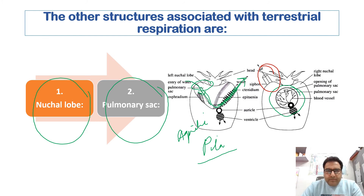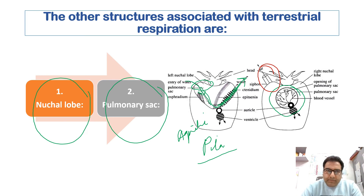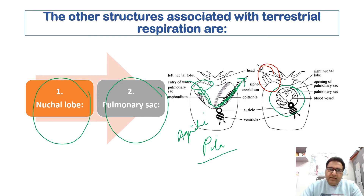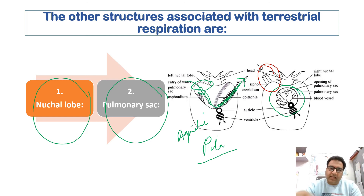In amphibious prosopobranches such as Pila, the paleal cavity is incompletely partitioned by a fleshy fold called the epithenia, creating a right branchial chamber and a left pulmonary chamber. Both chambers are highly vascularized, having a vascularized roof. Through the opening of these chambers — called pulmonary chambers — air enters and exits. Gas exchange takes place due to the partial differential pressure of oxygen and other gases.